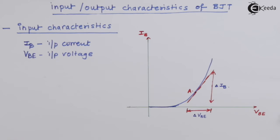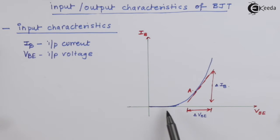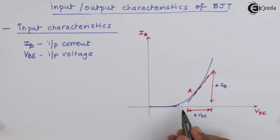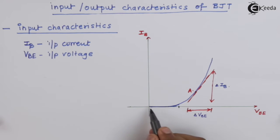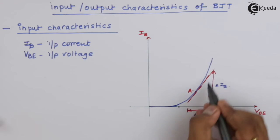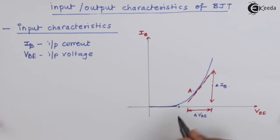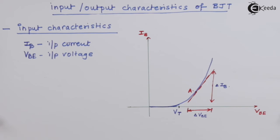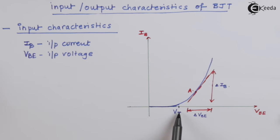The relationship between input voltage and input current is exponential. Up to a particular voltage I am getting no current, and after that particular voltage the current rises in an exponential manner. So that particular voltage is nothing but the threshold voltage, which is essentially the diode forward voltage.